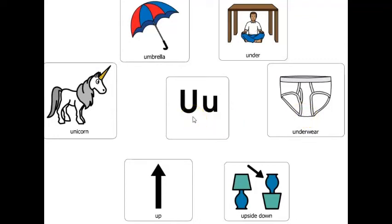What word that starts with the letter U shows you a direction? Up. What word that starts with the letter U is a magical creature? Unicorn.